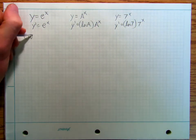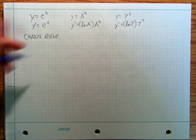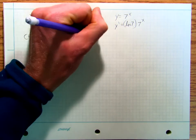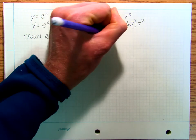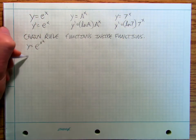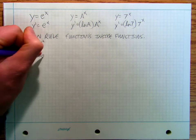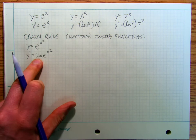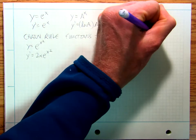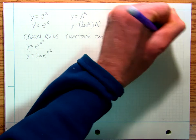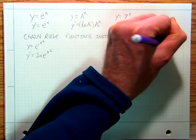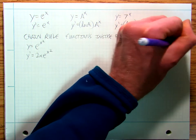We've got our chain rule — functions inside functions. So y equals e to the x squared, y prime is equal to two x times e to the x squared: derivative of the inside times the derivative of the outside. So y equals f of g of x, y prime is equal to g prime of x times f prime of g of x.